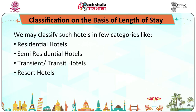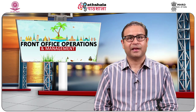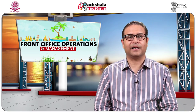Another classification of hotels could be done on the basis of length of stay, with five categories. Number one: residential hotels, also called apartment hotels or apartment houses. Rooms in a residential hotel are sold on a monthly or yearly basis and may be furnished or unfurnished, single or suite. Almost all residential hotels have a restaurant and may offer telephone services, laundry, and valet services. Advanced rents are usually collected while other charges are billed weekly. These hotels normally operate on the European plan.